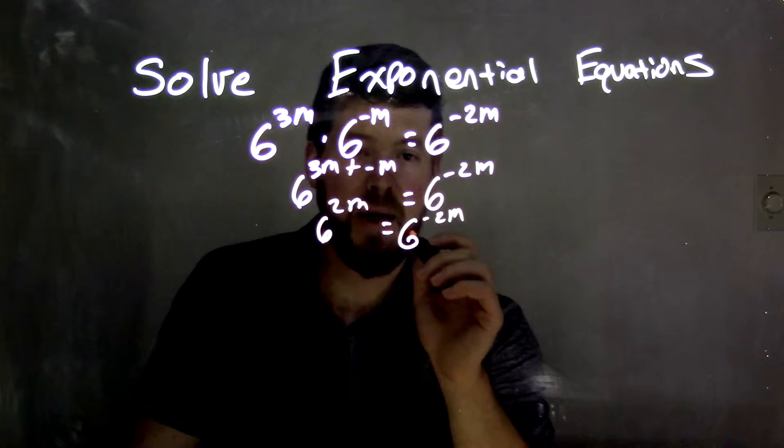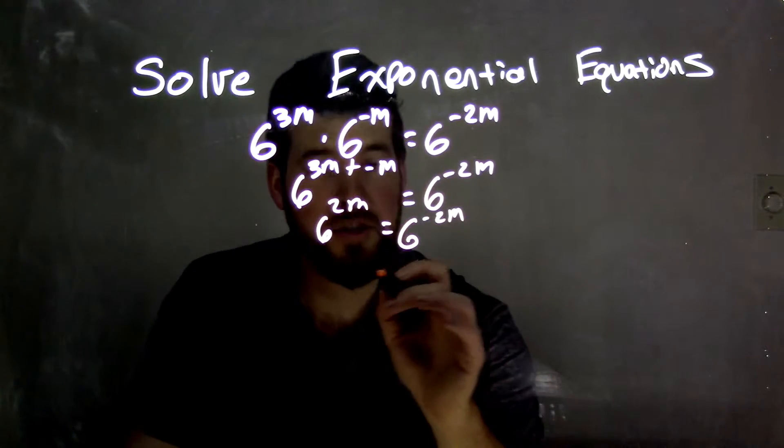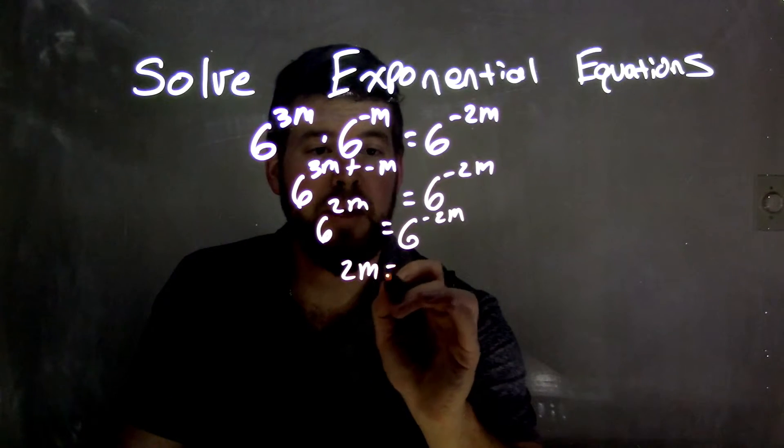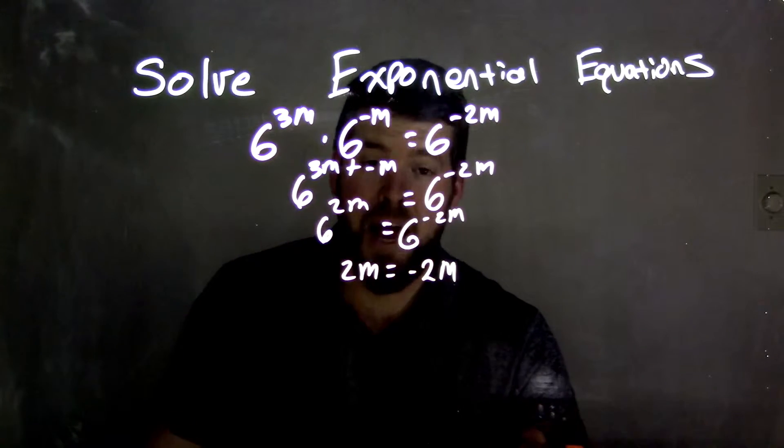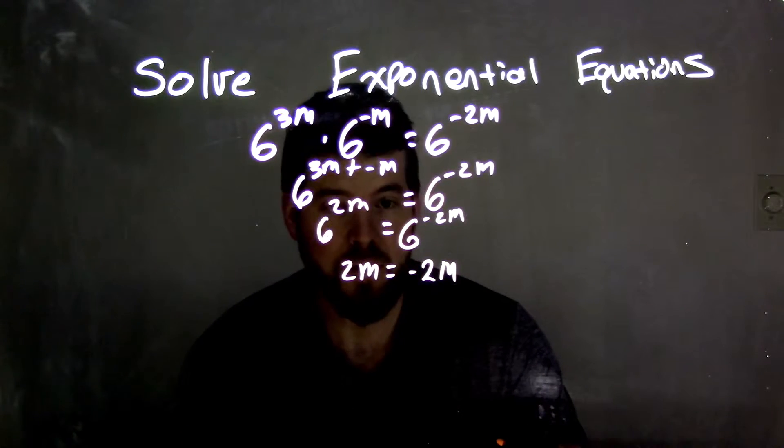Now that I have the same base, I can set my exponents equal to each other, and I have 2m equals negative 2m. Now I have to solve.